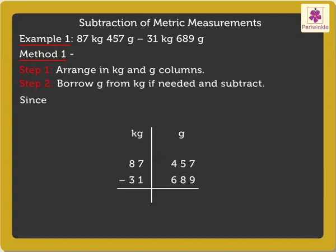Since 457 grams is lesser than 689 grams, we borrow 1 kilogram, that is 1000 grams, from 87 kilograms.